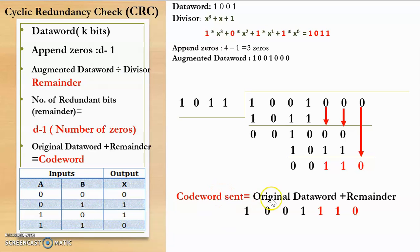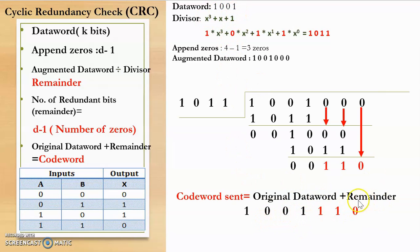The remainder bits 110 are the redundant bits, which are appended to the original data word to get the codeword. So the codeword sent is the original data word 1001 plus redundant bits 110, giving codeword 1001110, which is sent over the transmission medium.